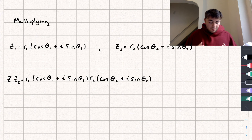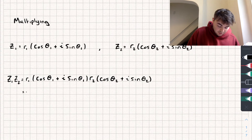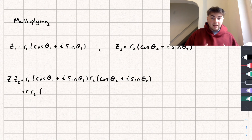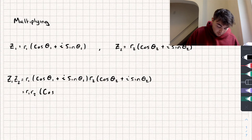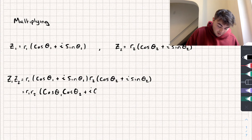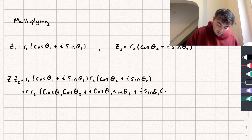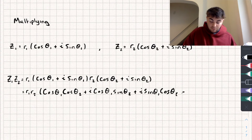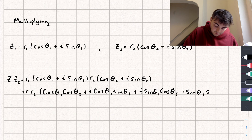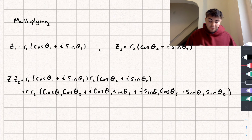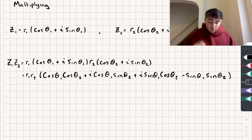I'm going to simplify it a little bit and expand the brackets. I'll rearrange it so that r1 and r2 are next to each other, then expand: we get cosine theta1 multiplied by cos theta2, then i·cos theta1·sine theta2, plus i·sine theta1·cos theta2, and finally — since i multiplied by i is negative 1 — minus sine theta1·sine theta2.